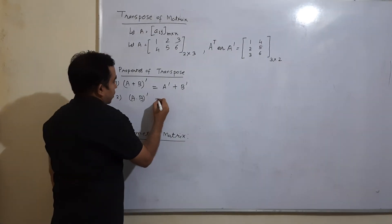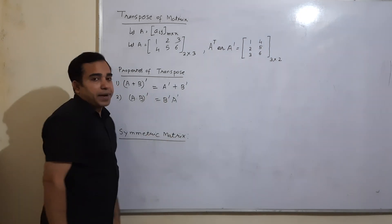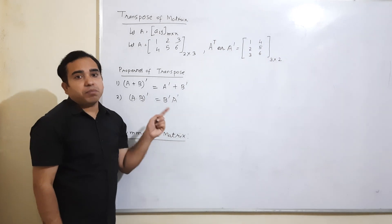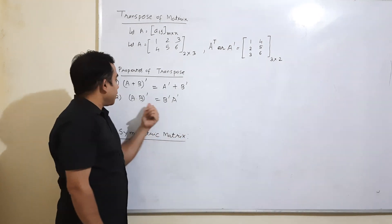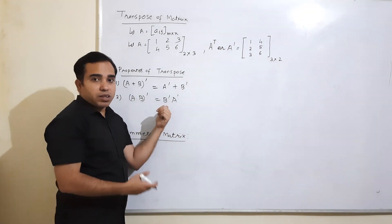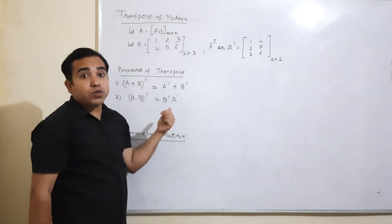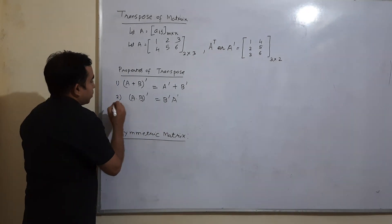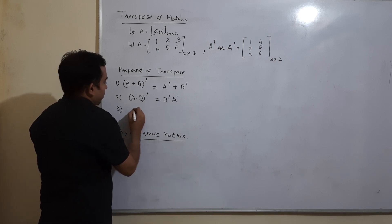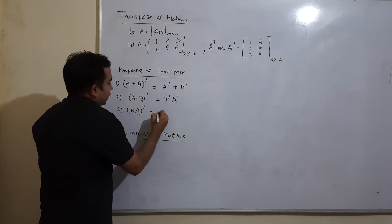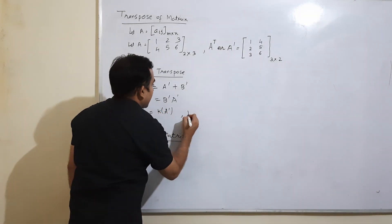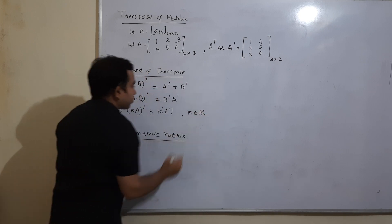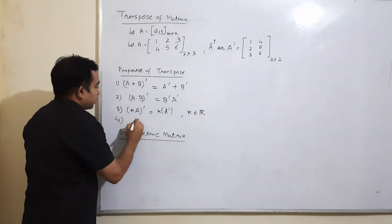Another property: (AB)ᵀ = Bᵀ Aᵀ. Note that matrix multiplication is not commutative, so I cannot write it as AᵀBᵀ — the order is reversed. This is also known as the shoe-socks property. One more property: (kA)ᵀ = kAᵀ, where k is a real number.